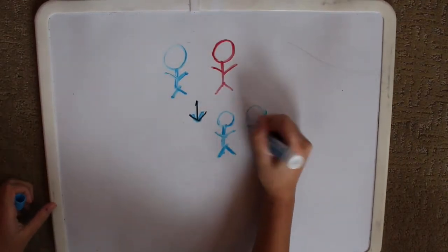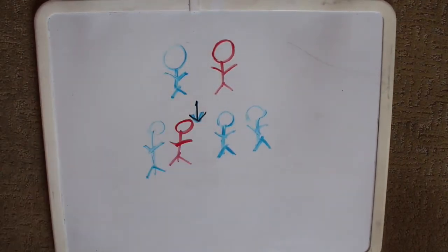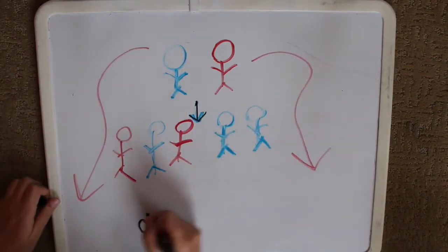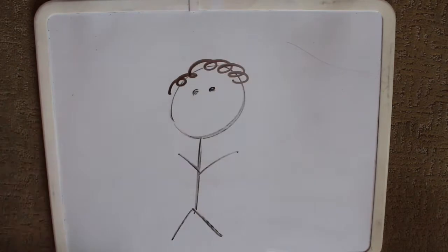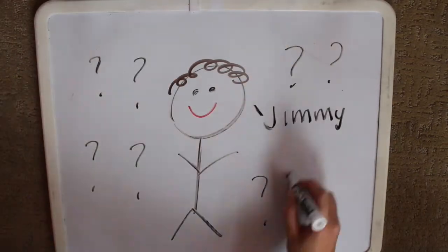OCD does run in families and genes likely play a role in the development of this disorder, although there are other less significant factors like daily stress. Now let's take a step back to see if 12-year-old Jimmy is even at risk for this disorder.